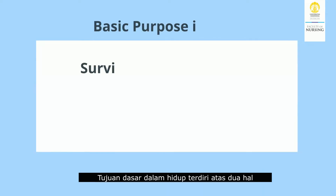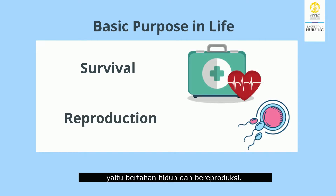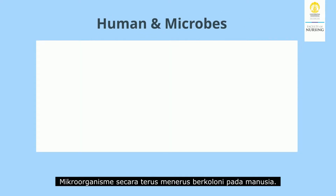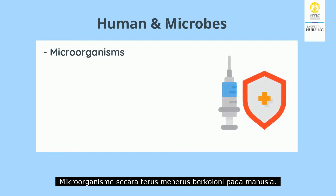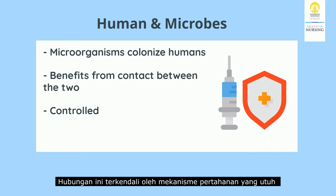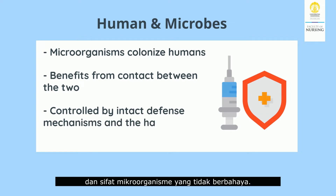The basic purpose in life consists of two things: survival and reproduction. This goal applies to humans as well as microbes. Microorganisms continuously colonize humans, and contact between humans and microorganisms can benefit both. This relationship is controlled by intact defense mechanisms and the harmless nature of microorganisms.